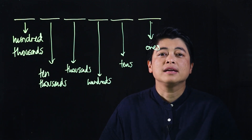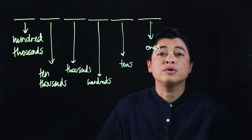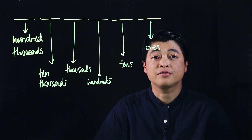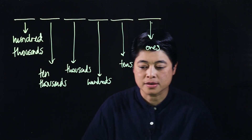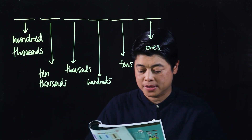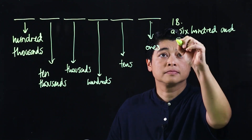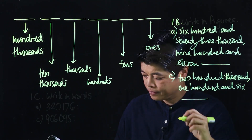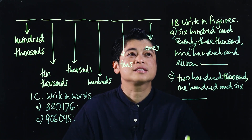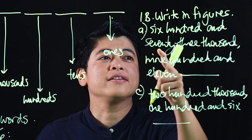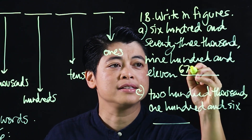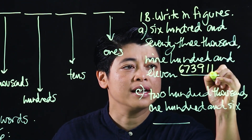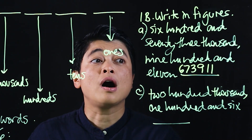The kids are expected to know how to read numbers up to 10 million. Our lessons will begin from page 9, where I've selected a few problems. In exercise 1b it says 'write in figures.' So it reads as six hundred and seventy-three thousand nine hundred and eleven — that's 673,911.